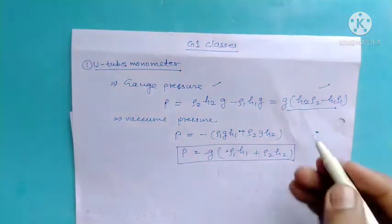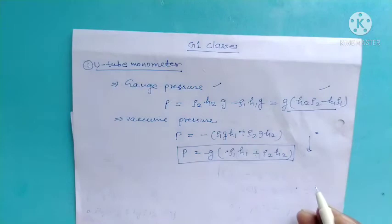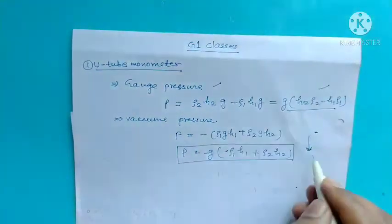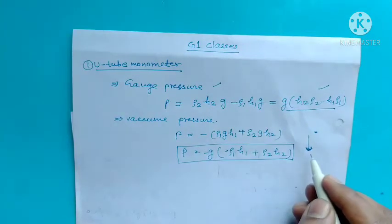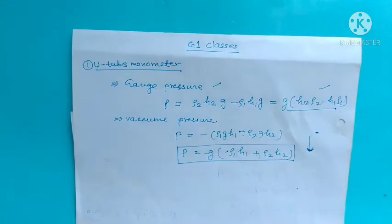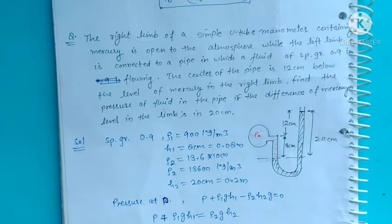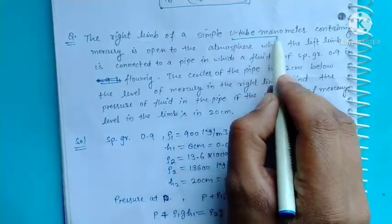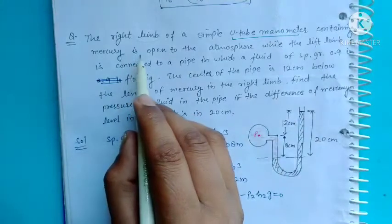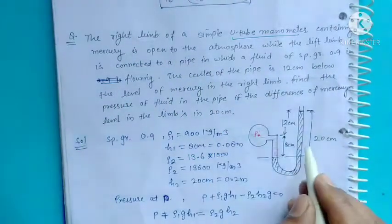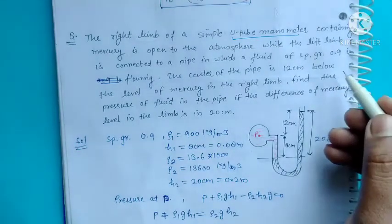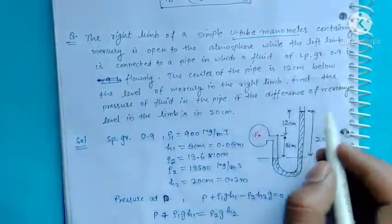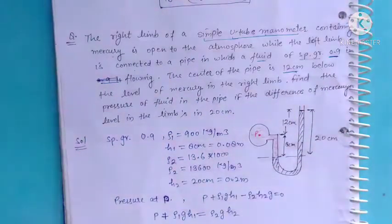अब हम next topic की तरफ बढ़ते हैं — एक numerical जो U-tube manometer पर based है। उसके बाद differential manometer आएगा। यह numerical exam point of view से काफी ज़्यादा important है। Question कह रहा है: the right limb of a simple U-tube manometer containing mercury is open to the atmosphere.